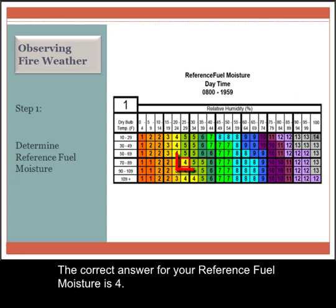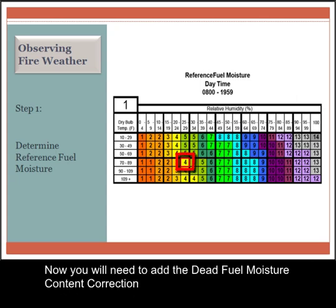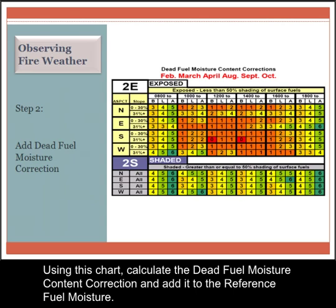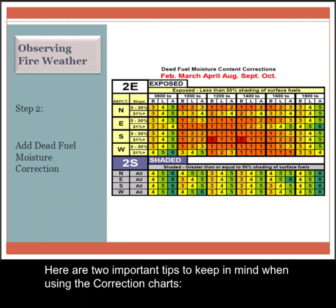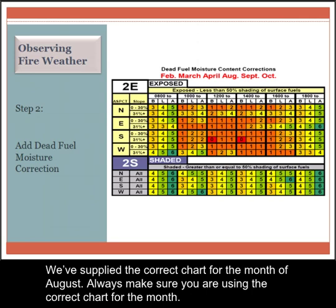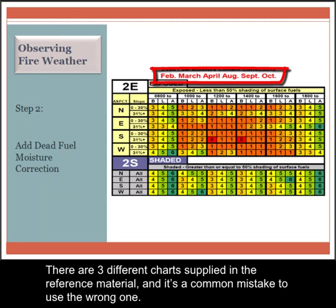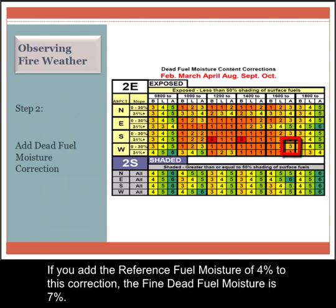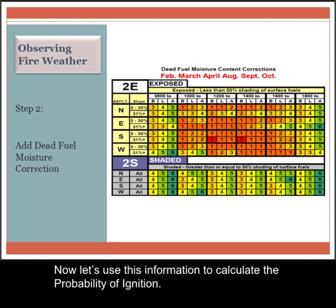The correct answer for your reference fuel moisture is 4. Now you will need to add the dead fuel moisture content correction to account for the environmental conditions in the area where you are taking the weather. Using this chart, calculate the dead fuel moisture content correction and add it to the reference fuel moisture. Two important tips: B below, L level, and A above refer to where the fire is compared to your location. Always make sure you are using the correct chart for the month — there are three different charts supplied in the reference material, and it's a common mistake to use the wrong one. Your answer for the moisture content correction should be 3%. If you add the reference fuel moisture of 4% to this correction, the fine dead fuel moisture is 7%.